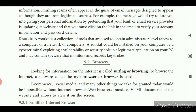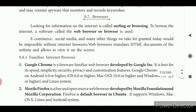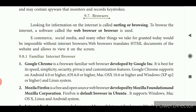Then browsers — what do you mean by a browser? A browser is Google Chrome, Mozilla Firefox and similar software used to access data from the internet. Looking for information on the internet is called surfing or browsing. To browse the internet, software called a web browser is used. Web browsers translate HTML documents of a website and allow you to view them on the screen.